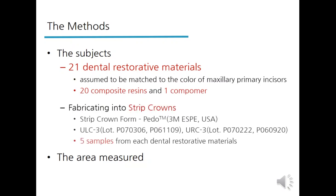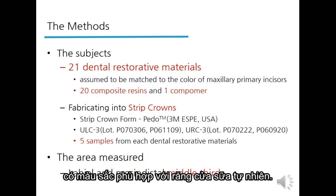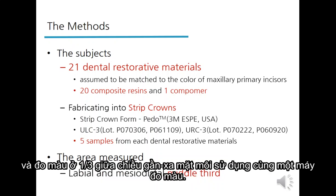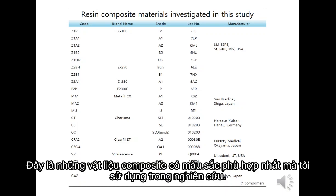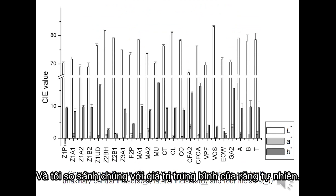I selected 21 dental restorative materials assumed to match well to the color of natural primary incisors. I fabricated them into strip crowns and measured the labial and mesiodistal middle thirds using the same intraoral colorimeter. These are my candidates for the best color-matching composites, and these are their colorimetric values, which I compared with the mean values of natural teeth.